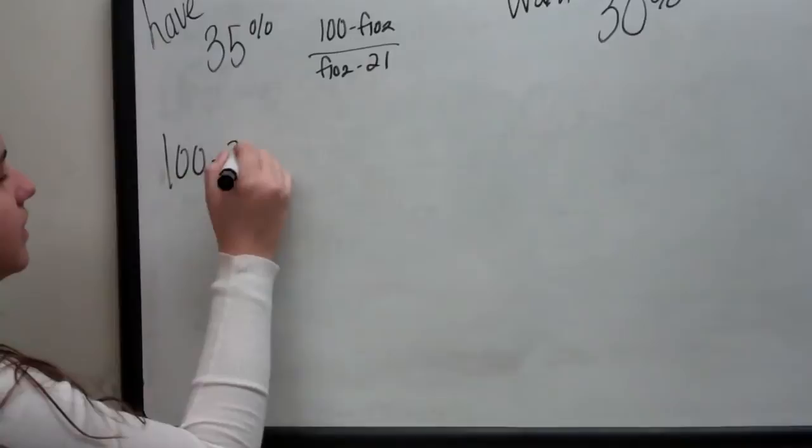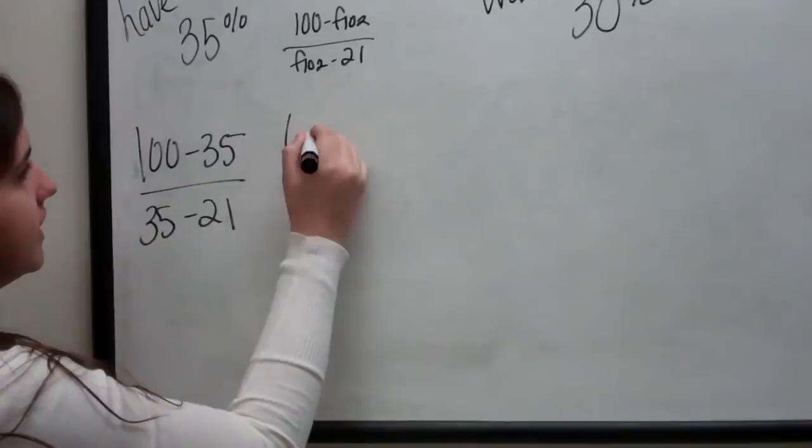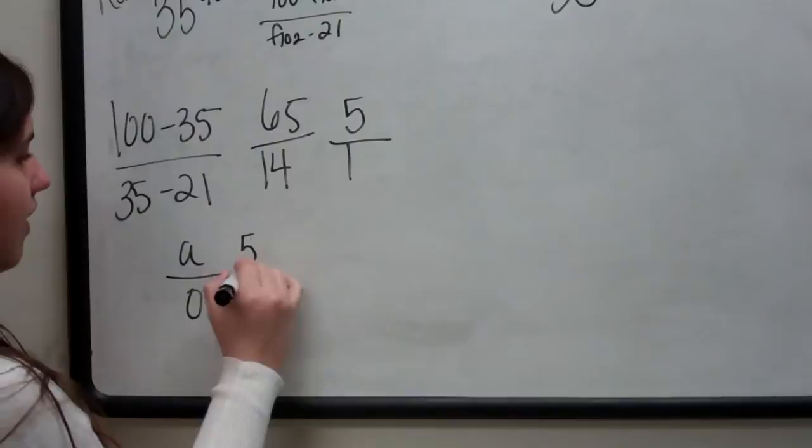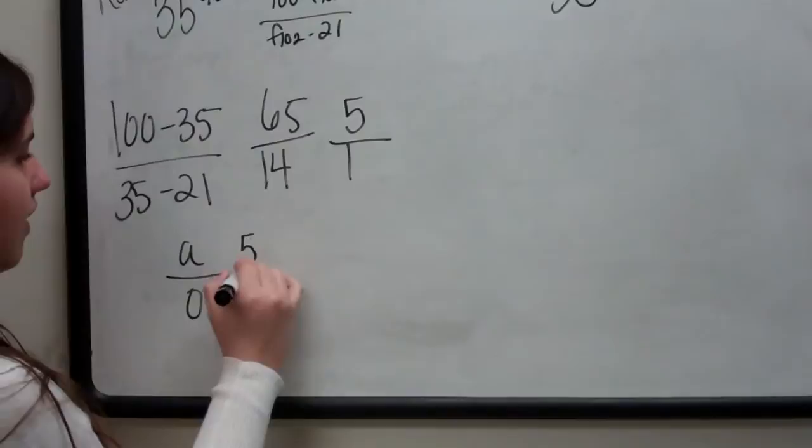Which gives me 65 divided by 14. 65 divided by 14 is 5 to 1. So for 35%, I got an air to oxygen ratio of 5 to 1.